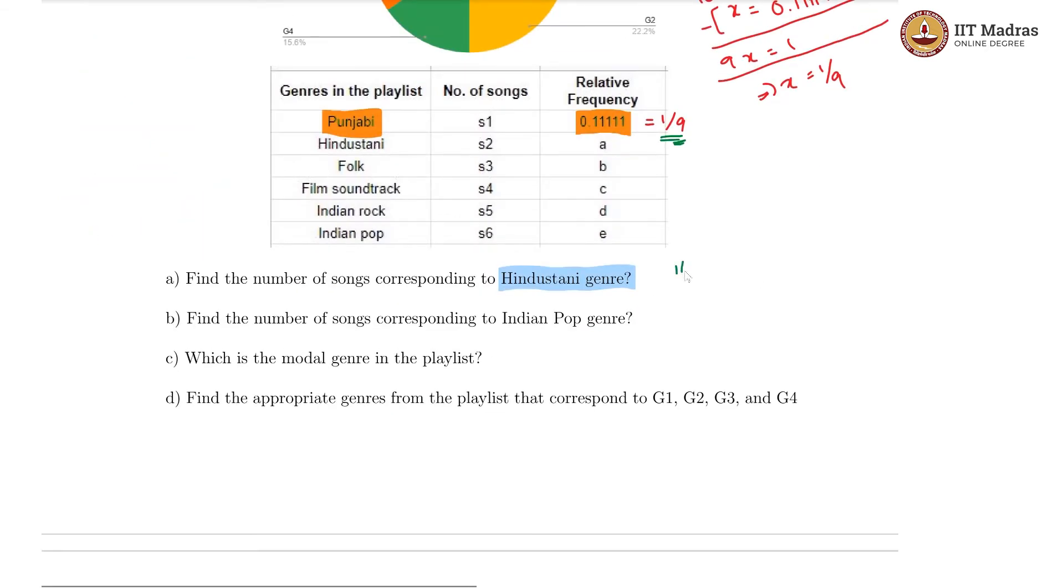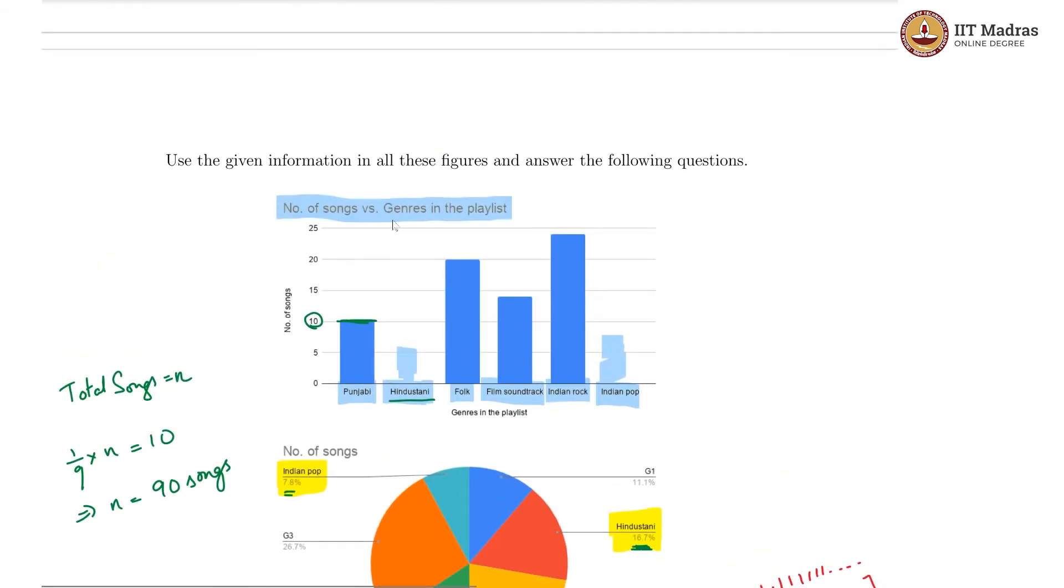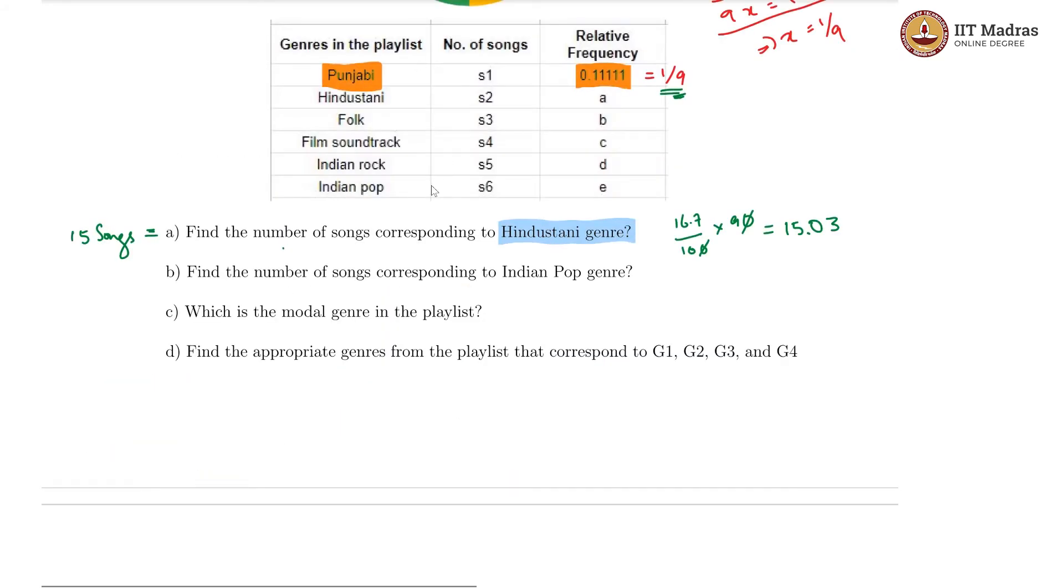We know now that Hindustani is 16.7 percent of 90 songs. So let us calculate that. This is essentially then 16.7 by 100. It is very likely that the 16.7 is an approximate value, rounded off value. Anyway, we get 9 times 1.67, which is coming out to be 15.03. We know that number of songs has to be an integer. So this has to be essentially 15 songs. So if we have to represent this in our bar graph, we would get something like this maybe. Of course, that is rough.